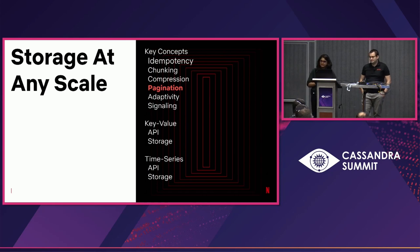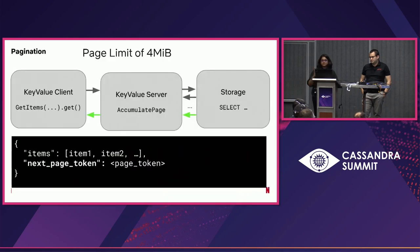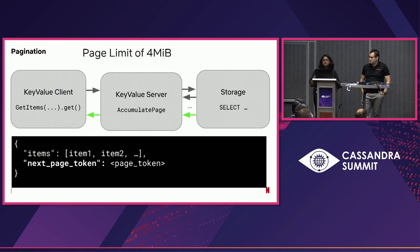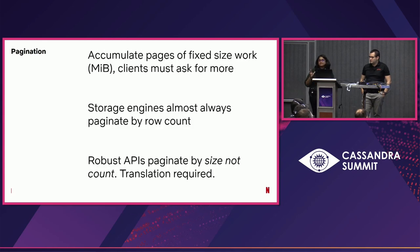The next concept is pagination. Storage engines come with record counts — we retrieve records from the storage engine — but we need to think about accumulating a page of fixed size on the server side. We read 4 MB of data, accumulate the page, and return it with a page token. This requires translation from page count to row count to page size.